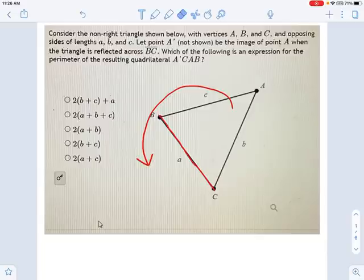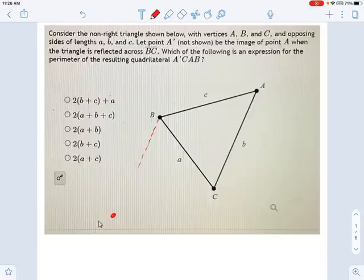Which means, let me get rid of these things. It means I'm going to have another triangle, a point out here like this, and another triangle now that looks like the following. And this is going to be A prime.